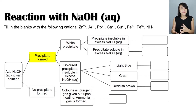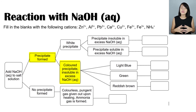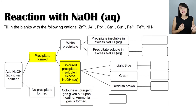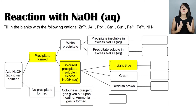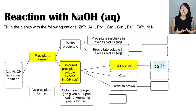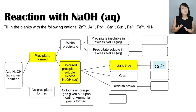Now let's move to the category where colored precipitate is formed. Things get easier with colored precipitates because each color is unique to a specific cation. If you add sodium hydroxide to a salt solution and see a light blue precipitate, you can confirm that copper(II) ions are present. On adding excess sodium hydroxide, this light blue precipitate remains insoluble.